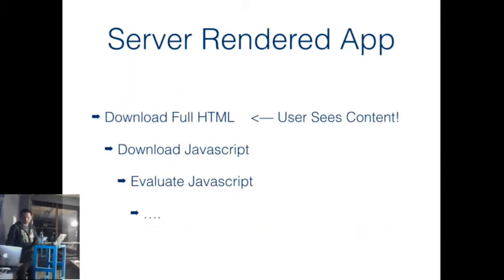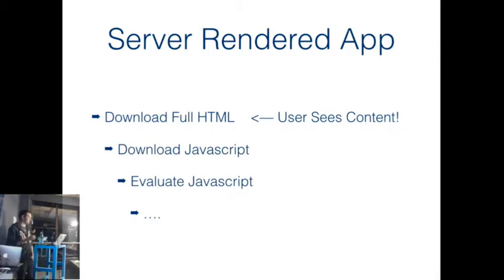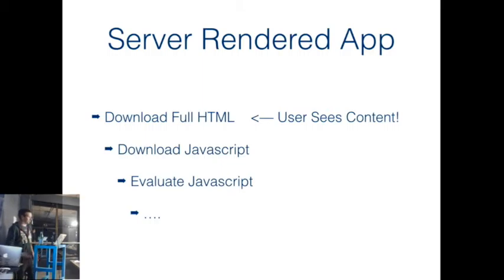Comparing that to a server-rendered app - the old model - you just download the full HTML, which is a lot quicker, and straight away the user sees content. In the background with an isomorphic approach, you'd be downloading that extra JavaScript and evaluating it. So it's a much better user experience. You can end up in nasty situations where you've downloaded the HTML but the user clicks on something and nothing happens because the JavaScript's not there to react to it - but there's better tooling to get around those use cases.